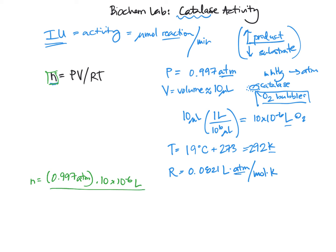All right, so we'll say n equals 0.997 atmospheres times 10 times 10 to the negative 6 liters divided by 0.0821 liter per atmosphere over mole K times the temperature, 292 Kelvin. We can cancel out a lot of the units here, so let's do that. Liter, liter, K, K. And that just leaves us with moles as our units left. And if we multiply that out, you can do the math, but the number that I get from this is 4.16 times 10 to the negative 7 moles of O2 gas.